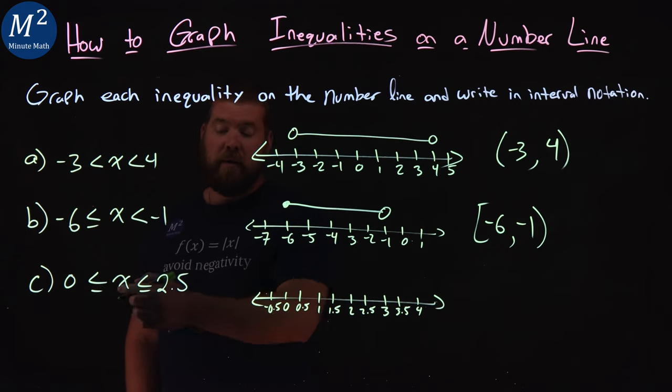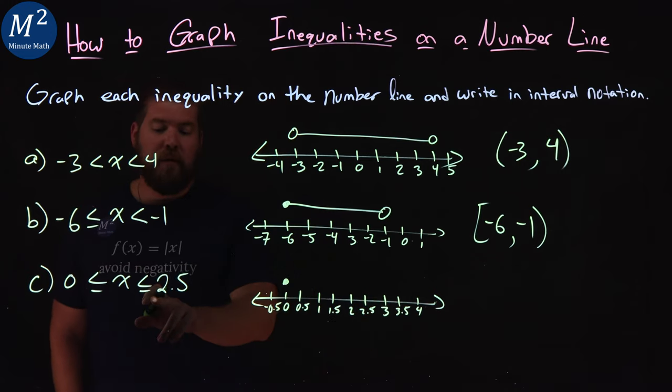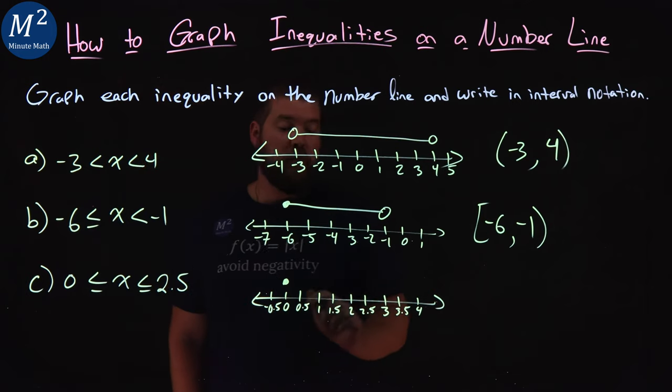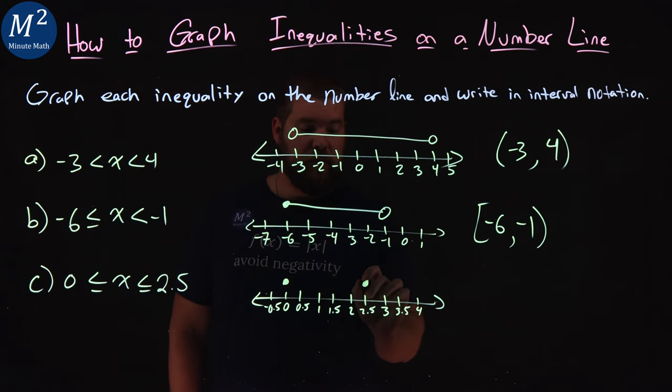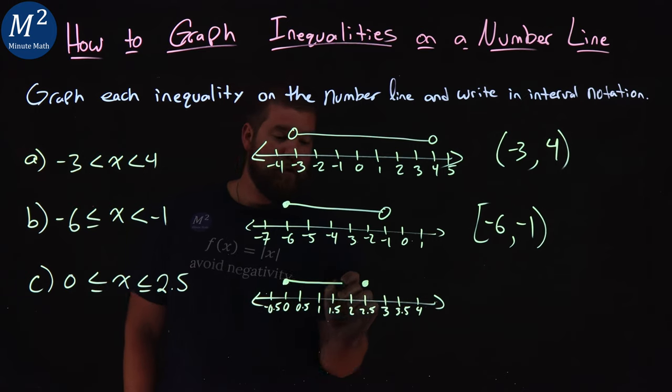0 is less than or equal to x. Key is the equal to part. x can equal 0, close circle right here. Then we have x can also equal a 2.5, close circle right here. Now x is between these two values, so we put a line between them, and there we have our graph.